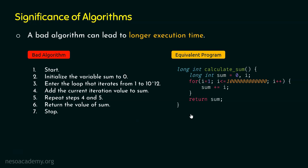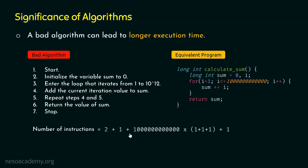When we execute this program, we will not get the output immediately — we will get the output after a long time. In order to understand why, we must know the number of instructions that will be executed by our computer. Let's find out the number of instructions.